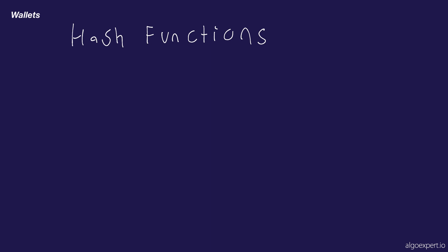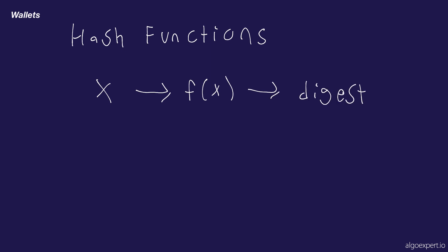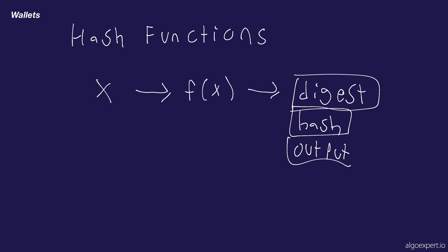One more thing to mention about hash functions is terminology. We have our input X, we pass it to the hash function F(X), and what it outputs is referred to as a digest — also called the hash digest, the hash, or just the output. There are many different terms people use: it could be called a hash, a digest, or the output. I just want to put 'digest' on screen in case you hear people use that term.